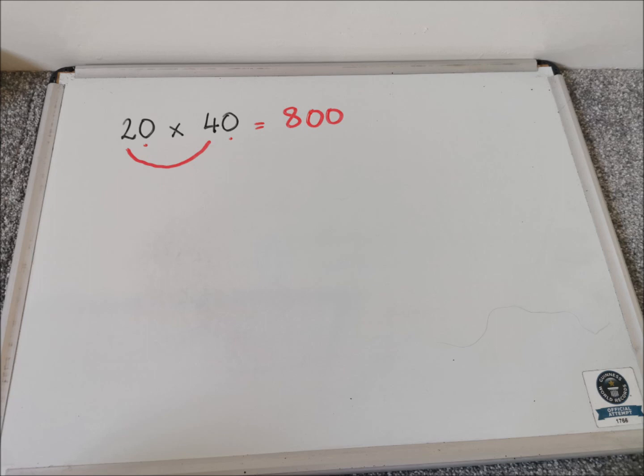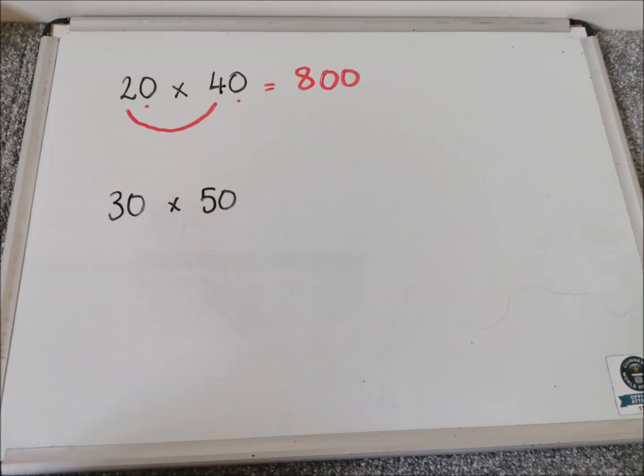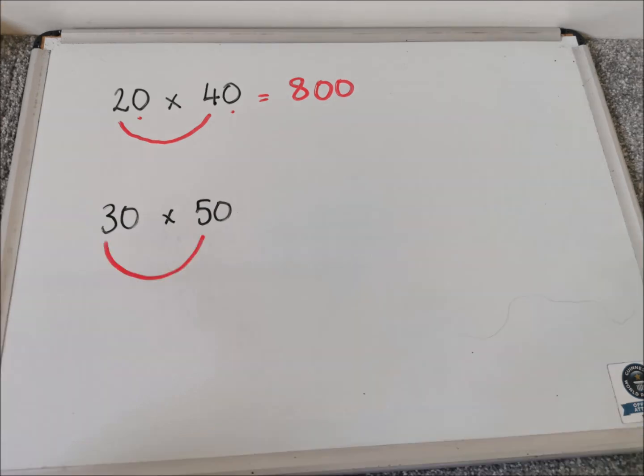Let's have a look at the next one. Let's imagine we have got 30 times 50. So I draw my smile between 3 and 5. And I do 3 times 5, which hopefully you know is 15.